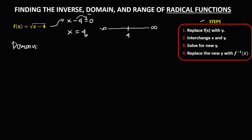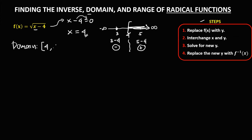We have negative infinity and positive infinity, so we need to test the numbers before and after positive 4. The test numbers are positive 3 and positive 5. If x equals 3, we get 3 minus 4 which is negative 1. If x equals 5, we get 5 minus 4 which is positive 1. Since there is no square root of negative numbers — because square roots of negative numbers are imaginary — the domain is [4, +∞), since 4 is part of the domain.